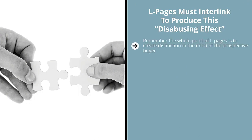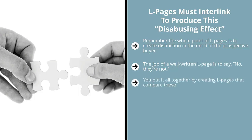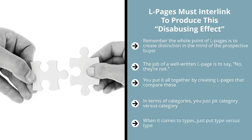The whole point of L pages is to create distinction in the mind of the prospective buyer. Prior to this point they were at the K page level, essentially saying all the options out there are basically the same. The job of a well-written L page is to say no, they're not. You can make your case by highlighting different levels, different categories, different types, and different brands — putting it all together by creating L pages that compare these. For levels, list top versus bottom and explain why. For categories, pit category versus category with pros and cons.